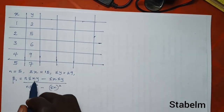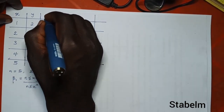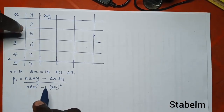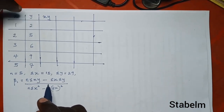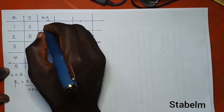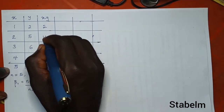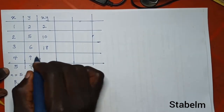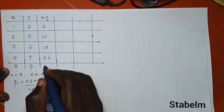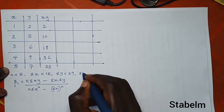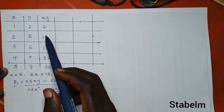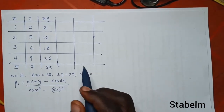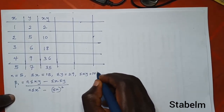From the formula we also need xy, so we multiply the corresponding values: 1×2=2, 2×5=10, 3×6=18, 4×9=36, 5×7=35. Adding these up — 2 plus 10 plus 18 plus 36 plus 35 — gives summation xy equals 101.